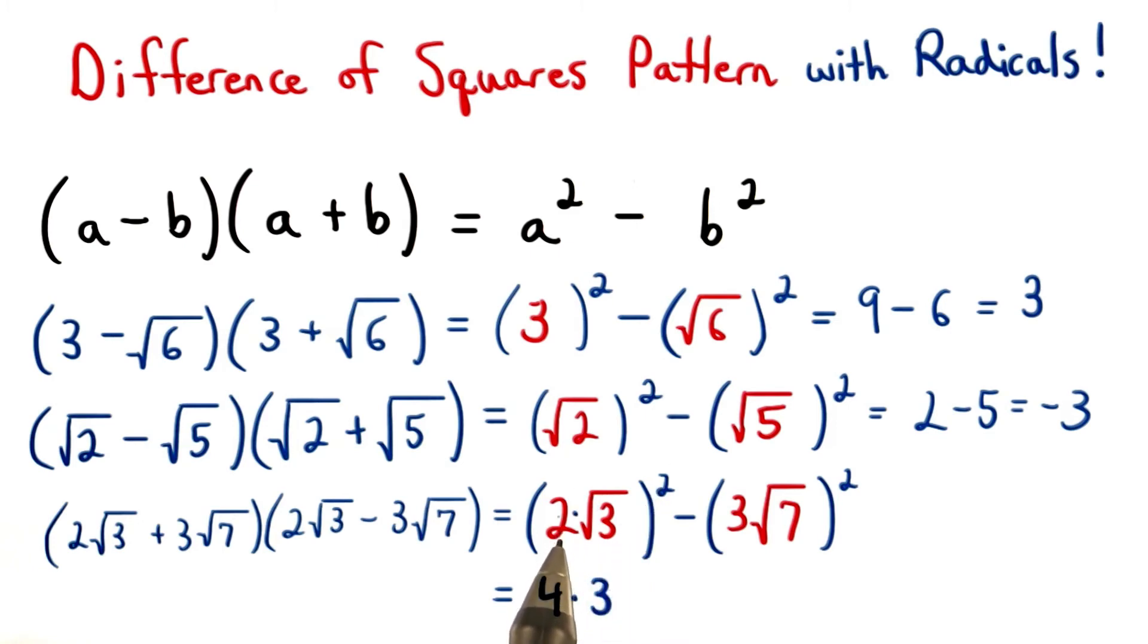There's multiplication between this number and this radical, so after we square, there's still multiplication between this number and this number. We square 3 root 7 to get 9 times 7. Next, we multiply 4 times 3 to get 12, and 9 times 7 to get 63, and then subtract to get our final answer of negative 51.